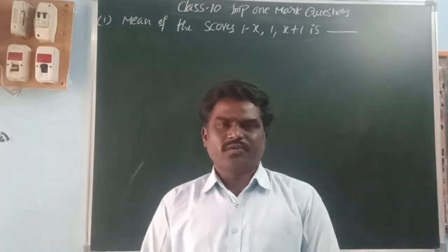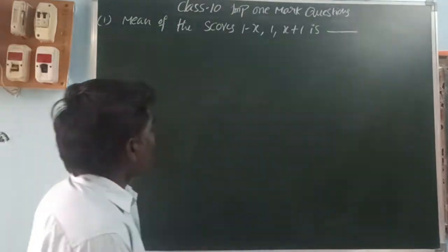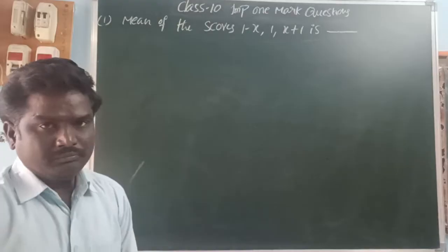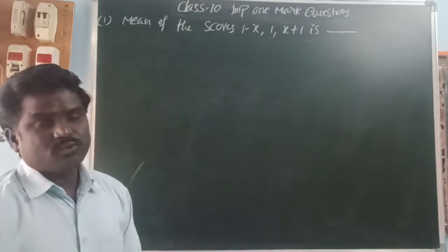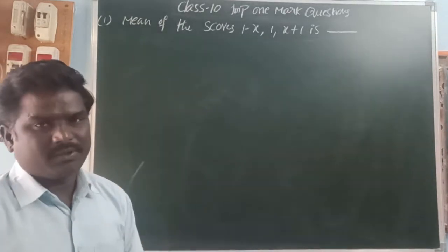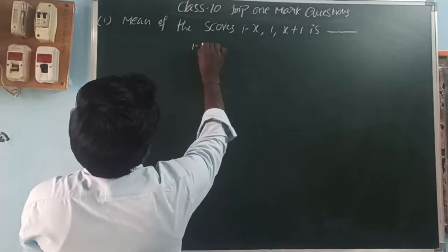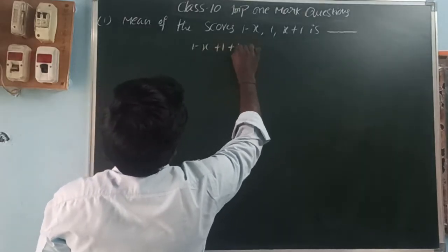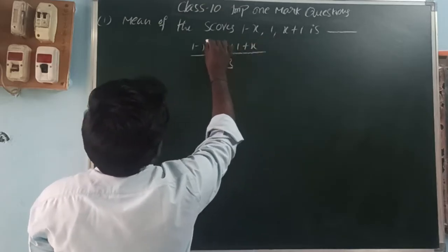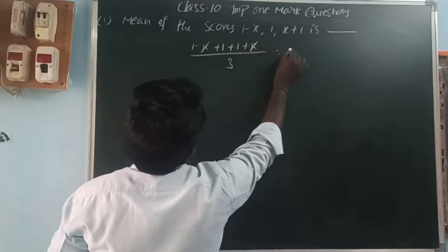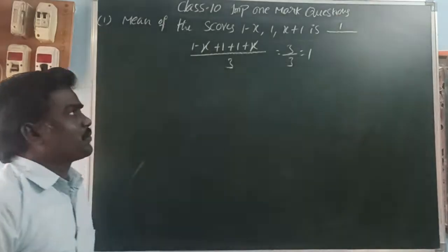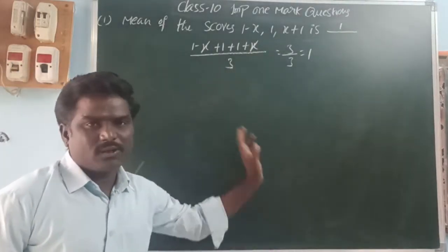Find the mean of the scores: 1 minus x, 1, x plus 1. Mean means the sum of observations by number of observations. So here: (1 minus x) plus 1 plus (x plus 1) — the x terms cancel — giving 3. So 3 divided by 3 equals 1. The mean of these scores is 1.